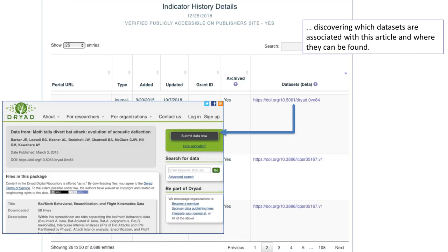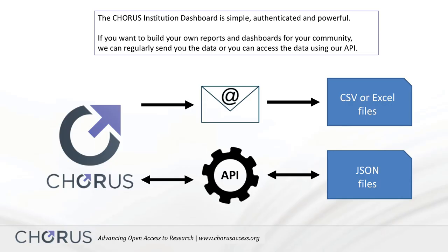The CORUS Institution Dashboard helps you discover which datasets are associated with an article and where they can be found. The dashboard is simple, authenticated, and powerful. If you want to build your own reports and dashboards for your community, we can regularly send you the data, or you can access the data using our API.